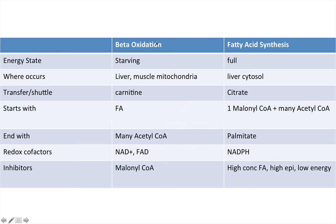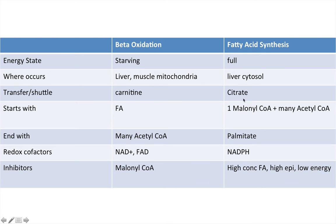Here is a table breaking down the main differences between beta oxidation and fatty acid synthesis. In terms of energy state: beta oxidation occurs in a starving state, while fatty acid synthesis occurs in a fed state — you need enough energy to synthesize something. Beta oxidation happens in the liver and muscle mitochondria; fatty acid synthesis happens in the liver cytosol. For the transport shuttle: beta oxidation uses the carnitine shuttle, and fatty acid synthesis uses the citrate shuttle, which is covered in the fatty acid synthesis video.